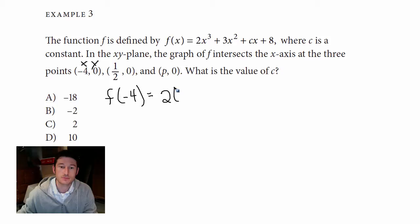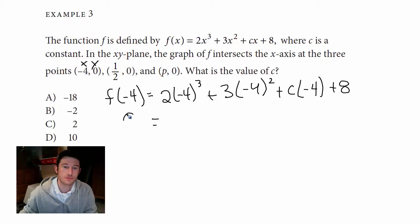So 2(-4)³ + 3(-4)² + c(-4) + 8. And remember this whole thing has got to be equal to zero, right? f of whatever just means that's the y value, which is zero here.